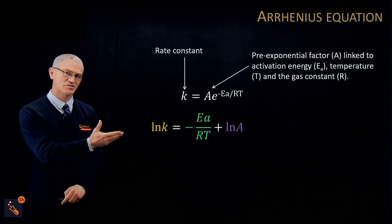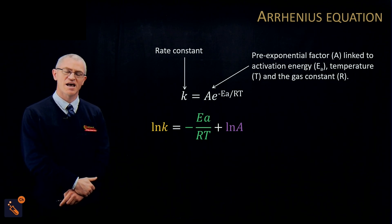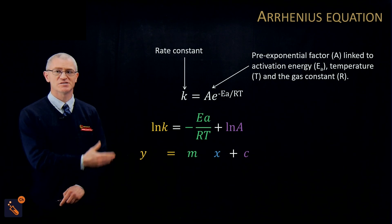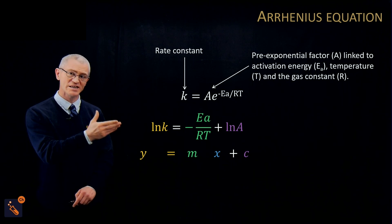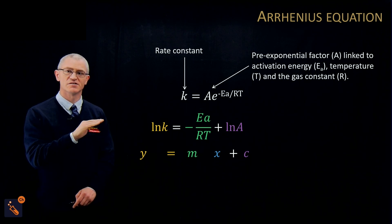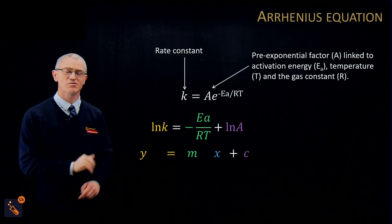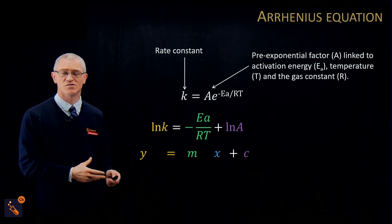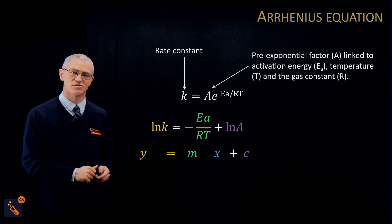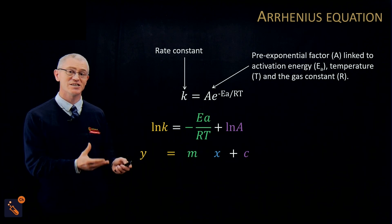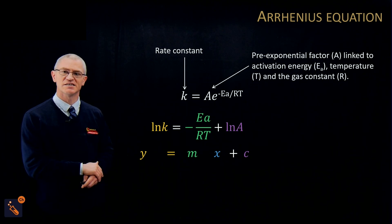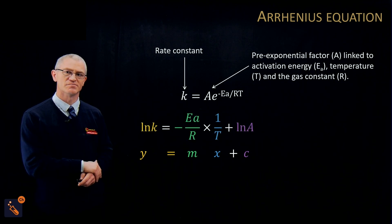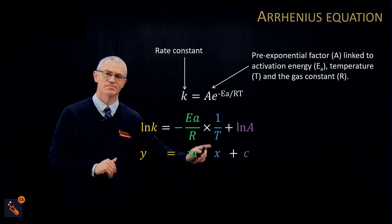We get this equation in the data sheet, and the key is: can you convert it to y = mx + c? That's your first challenge. They do this with other reactions too, asking you to convert them, so it's really useful to know how. All you need to know is what your variable is — the thing you're changing. The variable we're changing is T, so can you rearrange this to y = mx + c using T as your x?